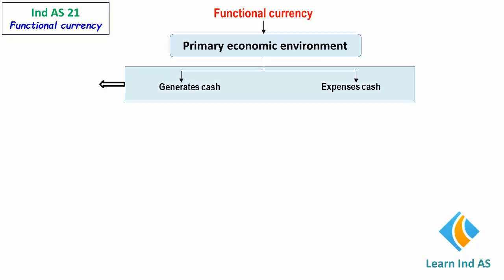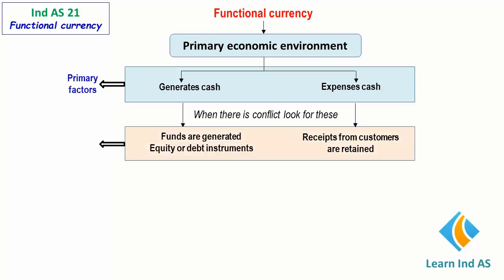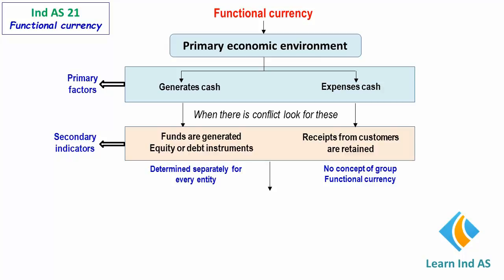When there is a conflict between the two primary factors, then the entity should look for further indicators, namely the currency in which funds are generated — which could be either equity or debt instruments — and the currency in which the receipts from customers are retained. These two are known as the secondary indicators. The entity need look for secondary indicators only when there is conflict in the primary factors.